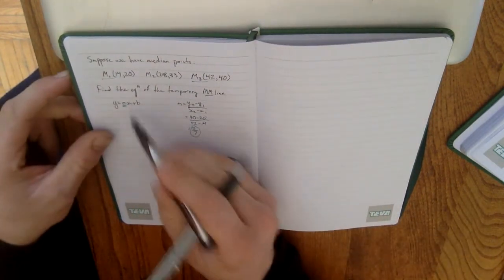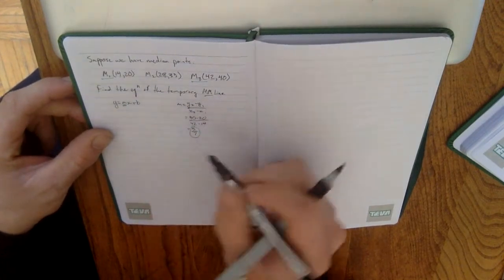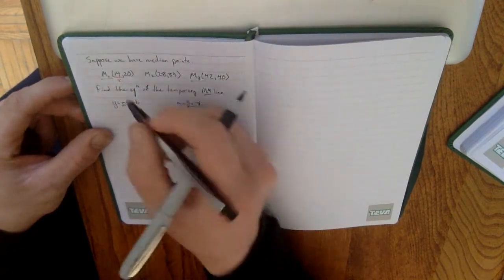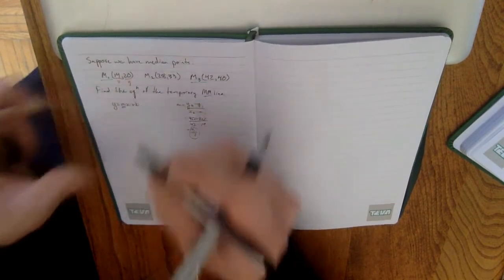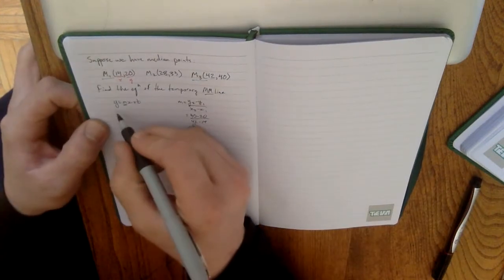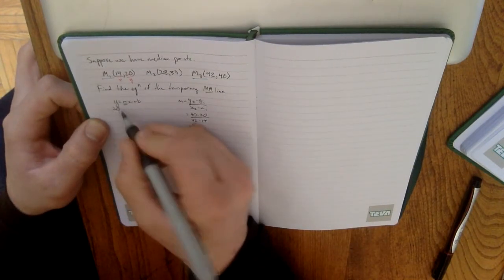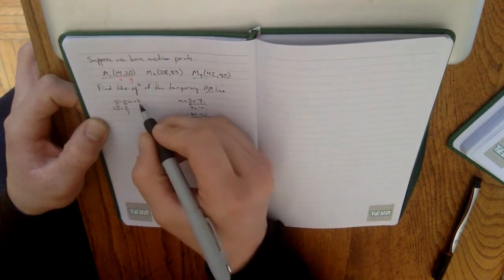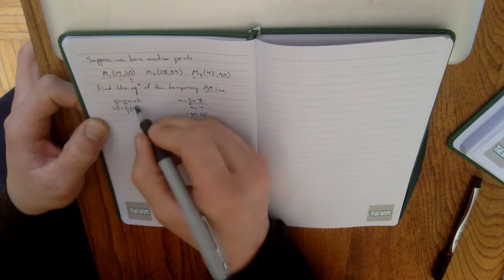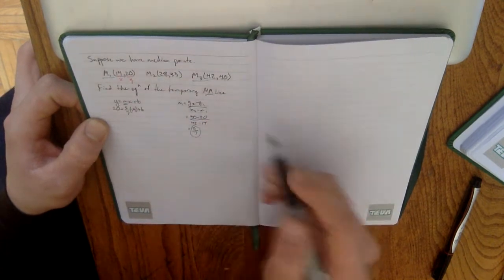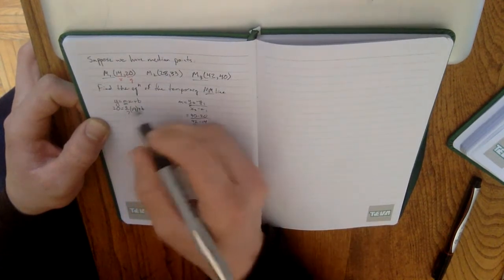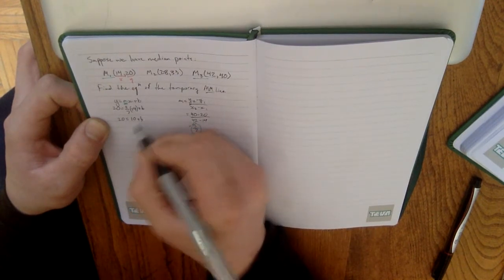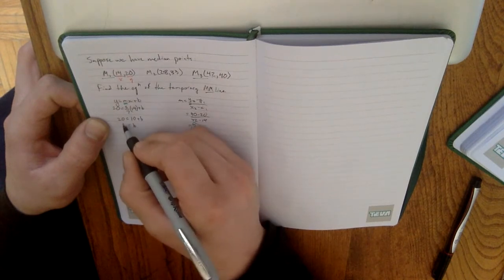Now, I also, to find the equation of this line, need to pick a value of x and y. So, I'm going to substitute in an x value of 14 and a y value of 20. This will allow me to then solve, remember 5 over 7, it'll allow me to then solve for my value of b, which is the only part that I'm missing in the equation of the temporary median-median line. So, this simplifies to 20 equals 10 plus b. And so, we know now our y-intercept is equal to 10.